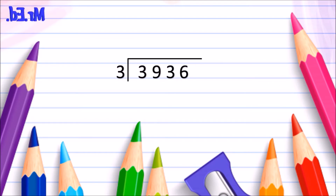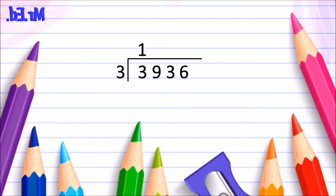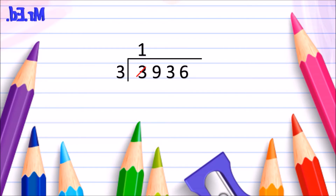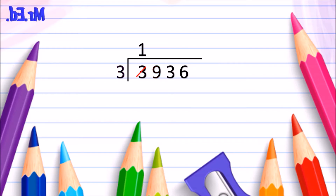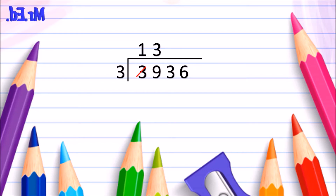How many times does 3 go into 3? Well, it's 1. And we write that in the area above the line, which is where the quotient will go. Once we've done that, we can cross out the first number of our dividend. Then we move along. How many times does 3 go into 9? Using our times tables: 3, 6, 9 — three times. So we write our 3 in the quotient area and we cross out our 9.